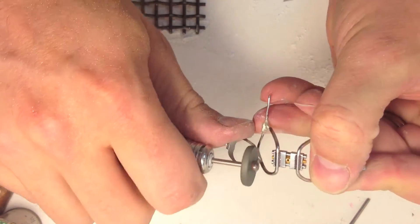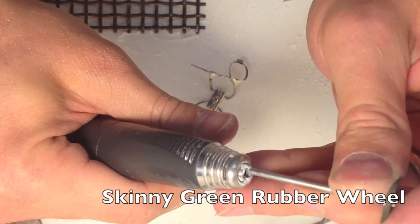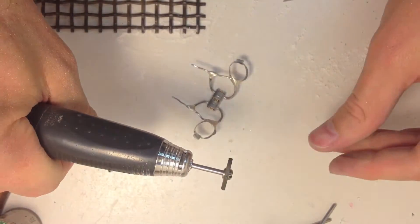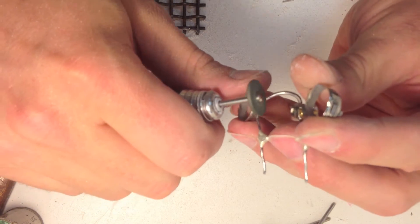You can already see it's starting to shine up. The same rubber wheel, just smaller. Now I can get into the nooks and crannies.